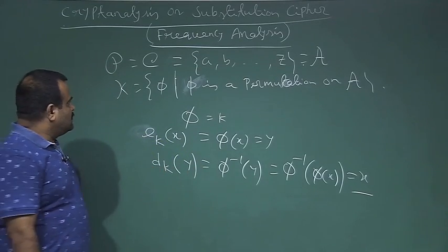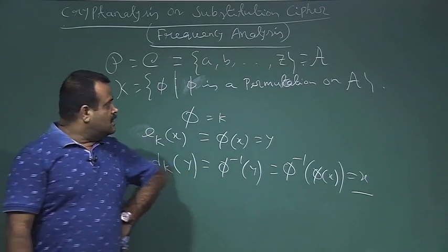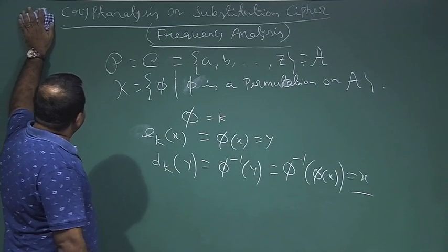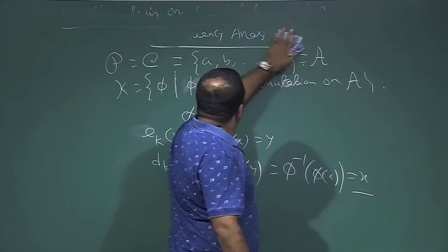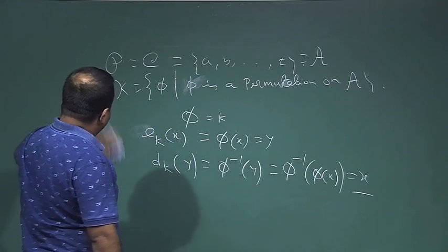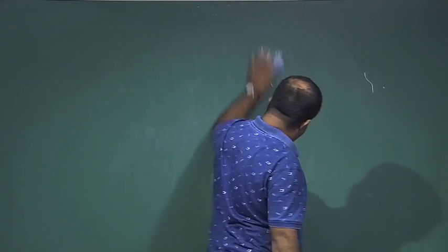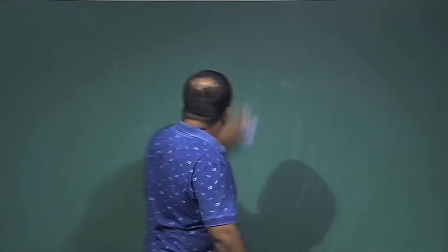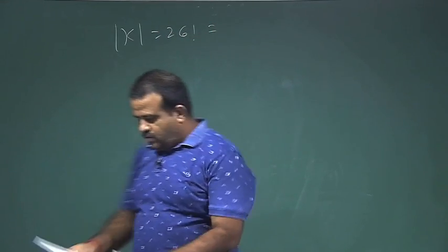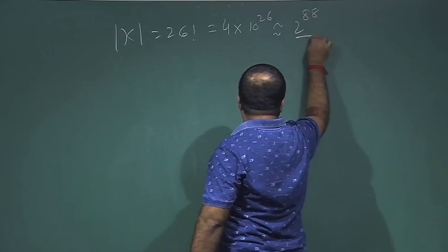The question is how secure this cipher is. The key space is the set of all permutations on the set of alphabets. There are 26! permutations. This number is basically 4×10^26, which is approximately 2^88 — a very large number, so this many permutations are possible.